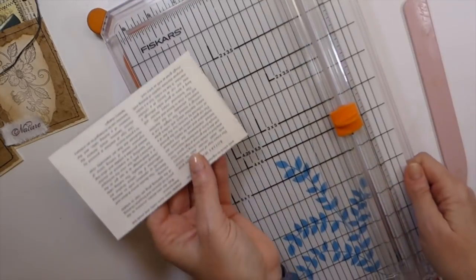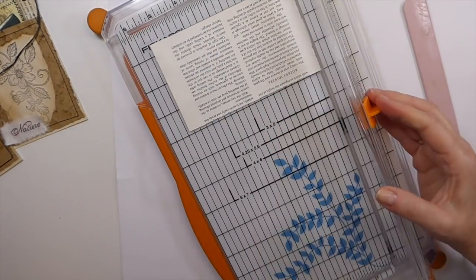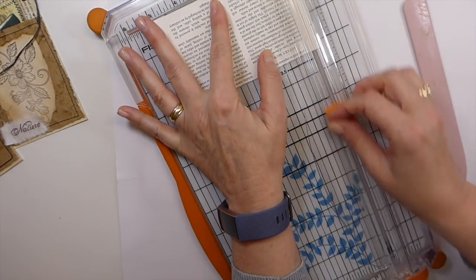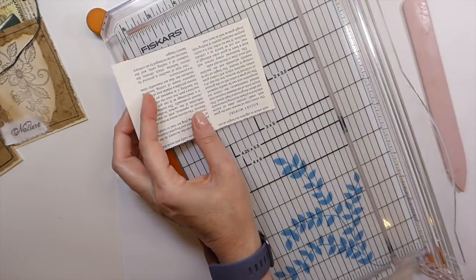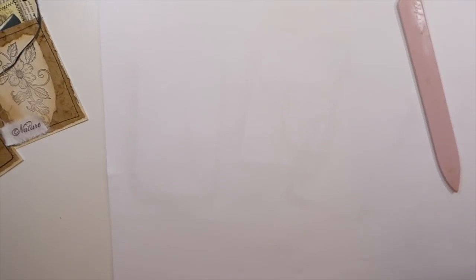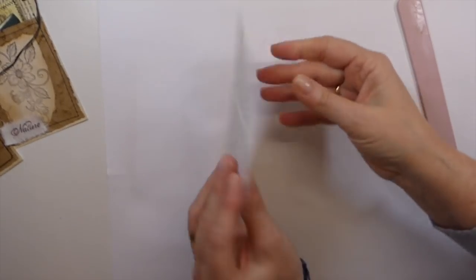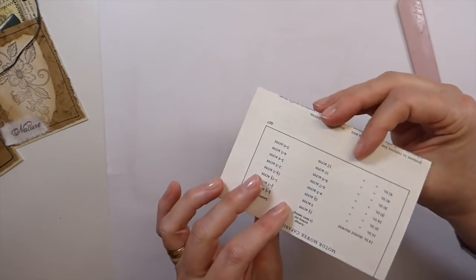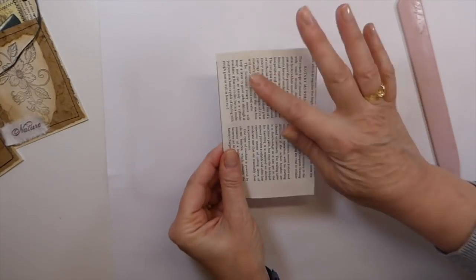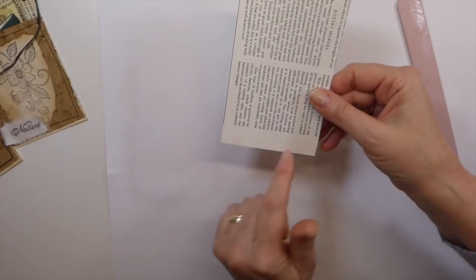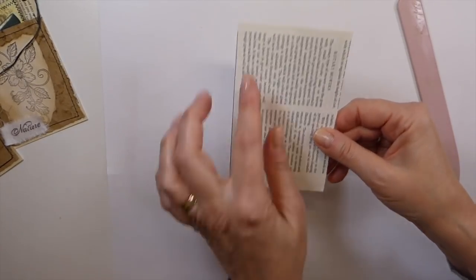And then the other thing I did was because I knew that I would want some of the print showing, I've opted to have that at the bottom. So I rounded the corners at the top of this.